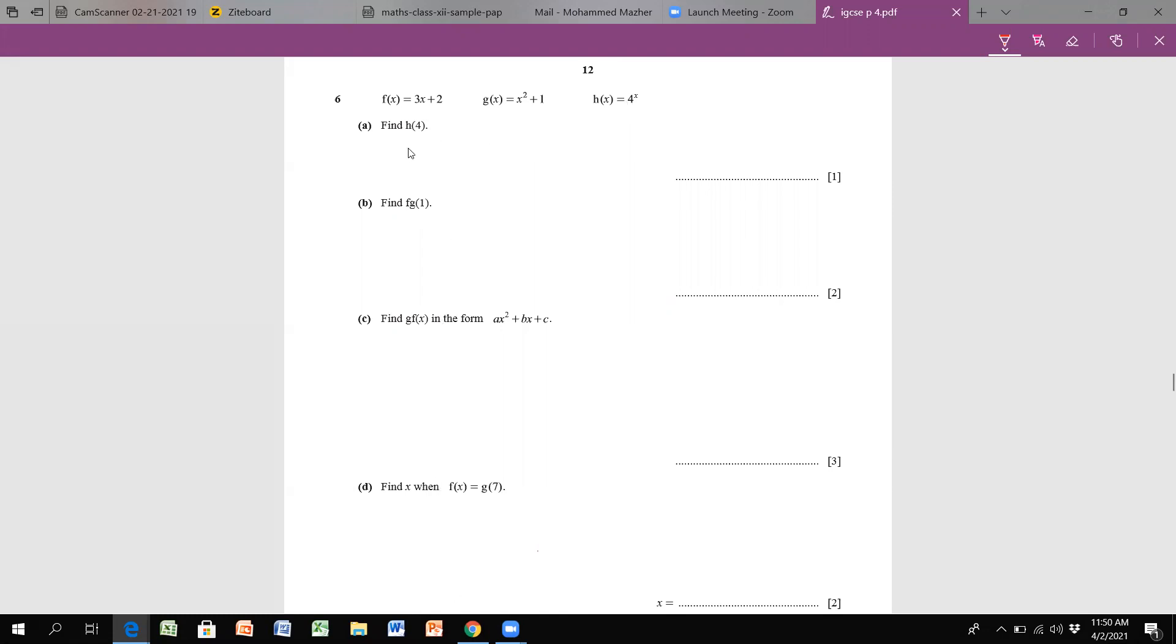Let's first start off with part A, which is h(4). It means wherever the h function is, plug in 4 in place of x. So h(4), I have 4 raised to x, so 4 to the 4. If you do 4 times 4, you're gonna get 256, because 4 squared is 16, and 16 times 16 is 256.